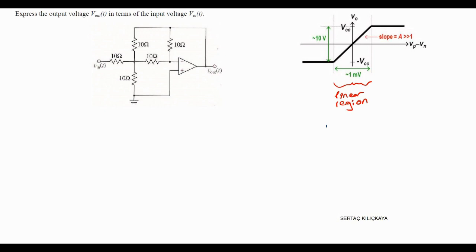It has two inputs and usually a single-ended output. Let me draw an op amp here. Positive terminal — non-inverting input. And negative terminal — inverting input. Let's give them names V1 and V2, and output Vout. Let's call the currents I plus and I minus.